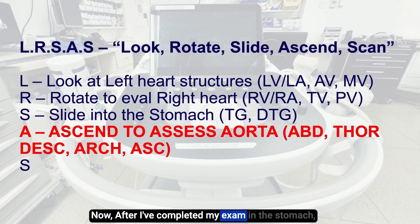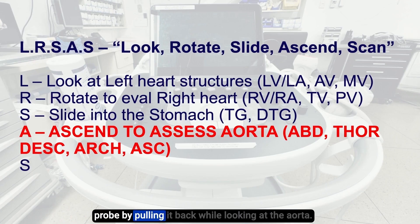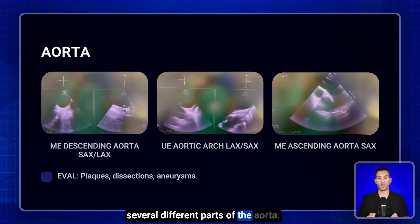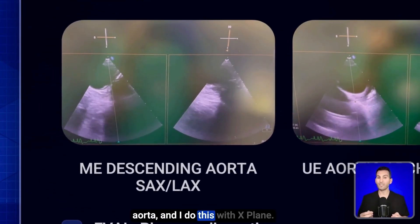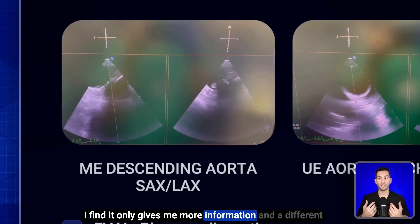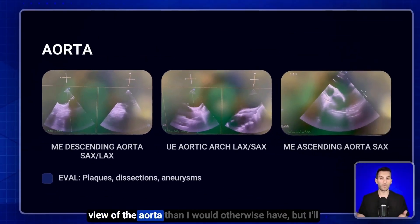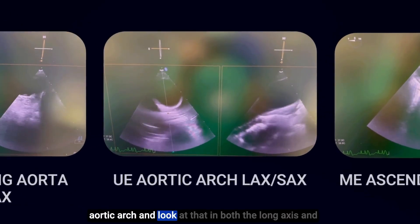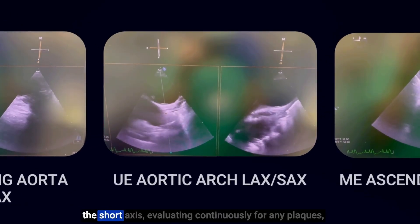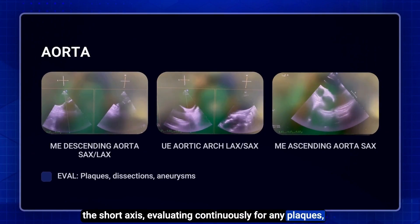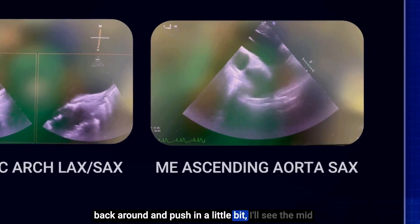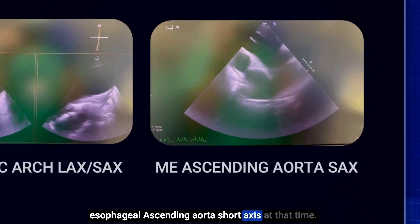After completing my exam in the stomach, I'll rotate leftward and start to ascend with the probe by pulling it back while looking at the aorta. I look at the descending aorta using X-Plane, which gives me more information and a different view than I'd otherwise have. I'll pull back looking at the descending aorta, go up to the aortic arch and look at that in both long axis and short axis, evaluating continuously for plaques, dissections, and aneurysms. Then as I come back and push in a little bit, I'll see the midesophageal ascending aorta short axis.